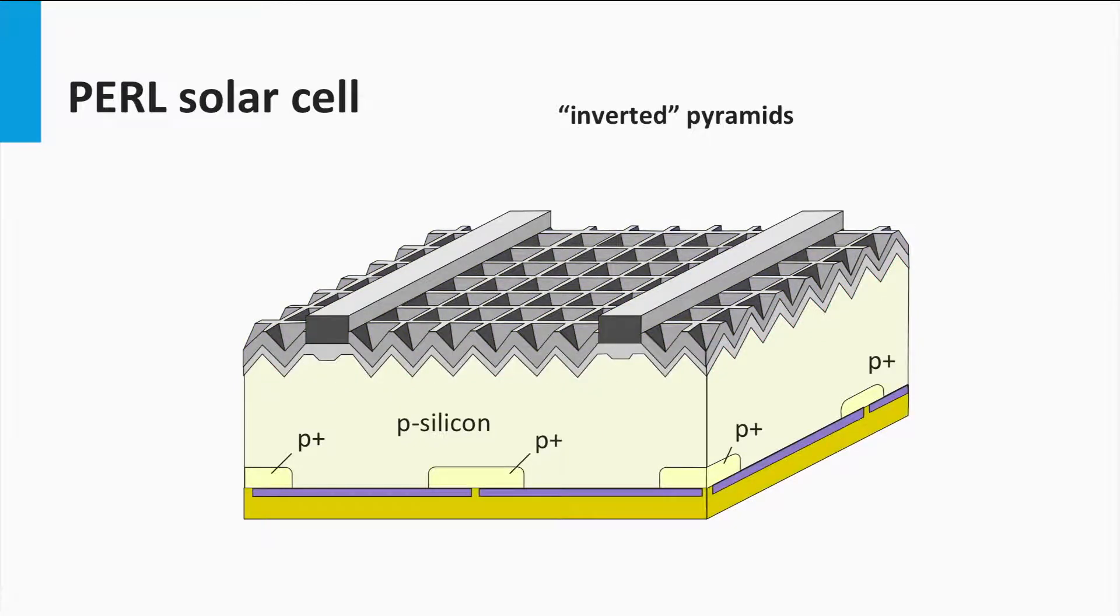At the rear surface of the solar cell, point contacts have been used in combination with thermal oxide passivation layers. The oxide operates as a passivation layer of the non-contacted area, to reduce the unwelcome surface recombination.